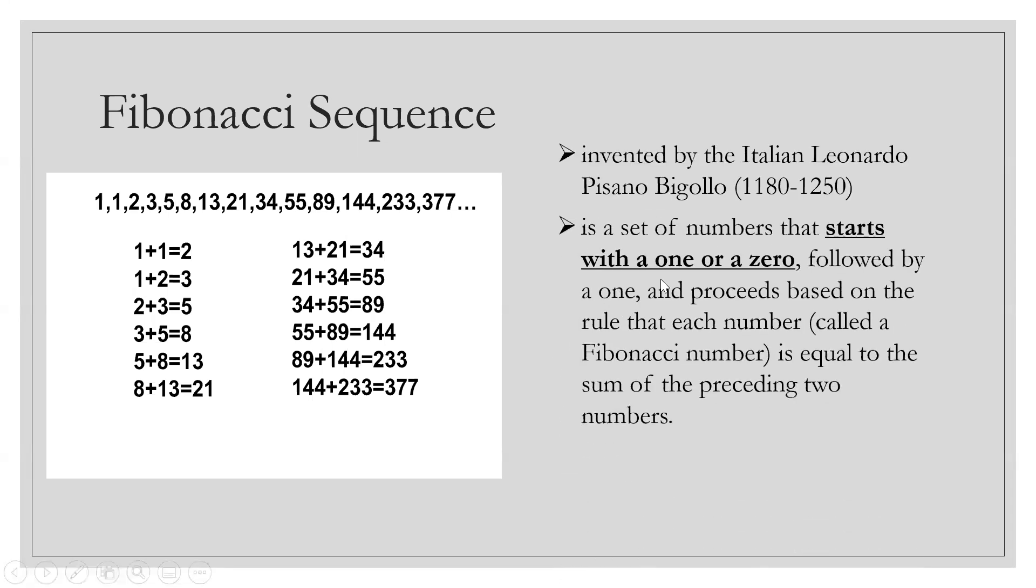Fibonacci sequence is a set of numbers that starts with one or a zero, followed by a one, and proceeds based on the rule that each number is equal to the sum of the preceding two numbers. The rule is this: the two ones, 1, 1.